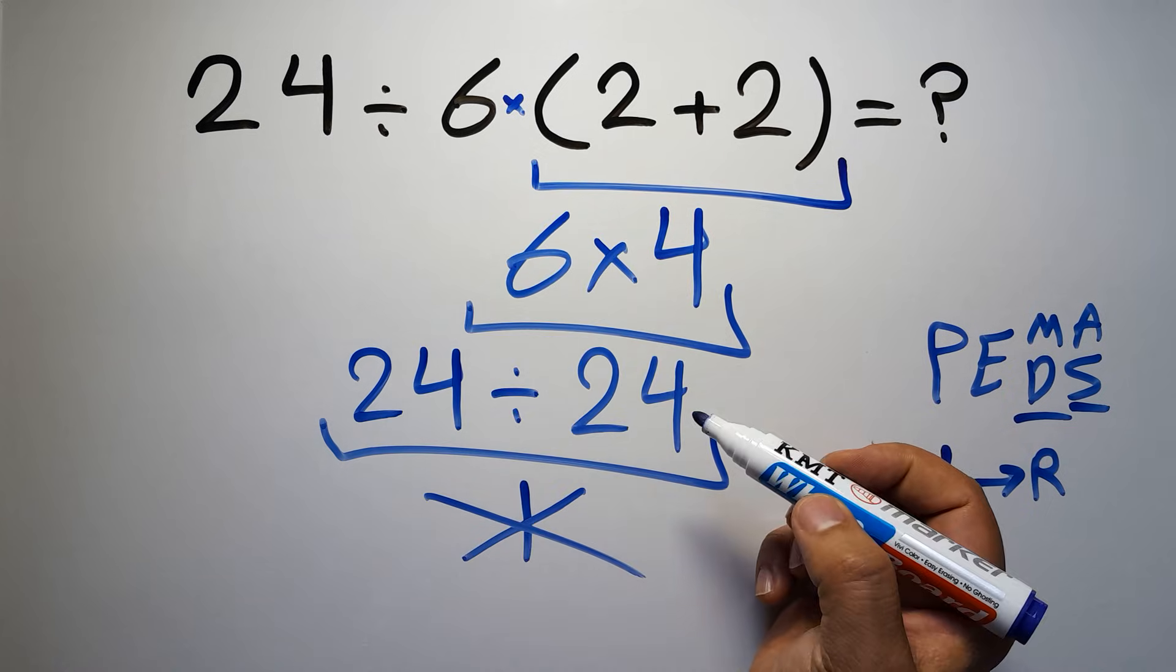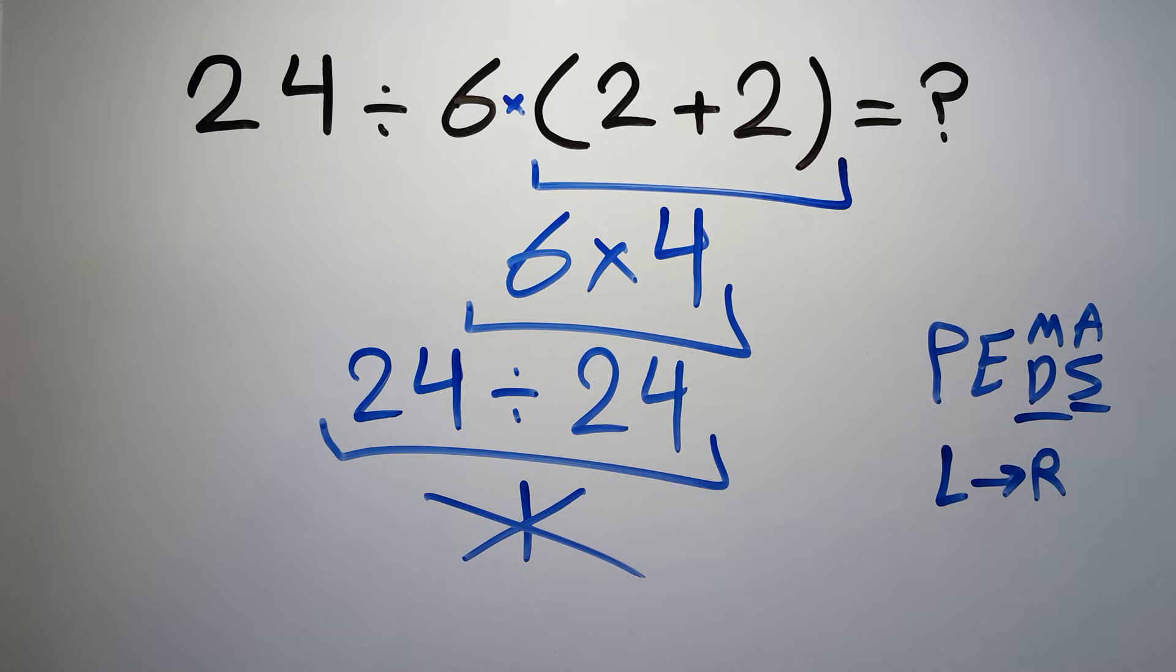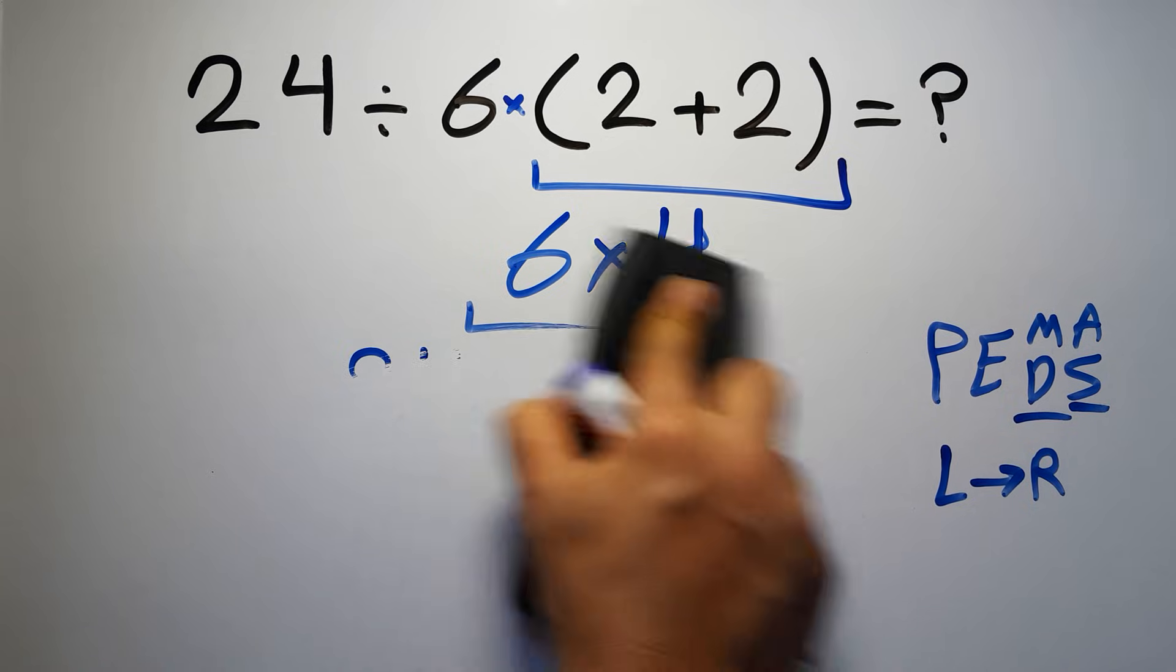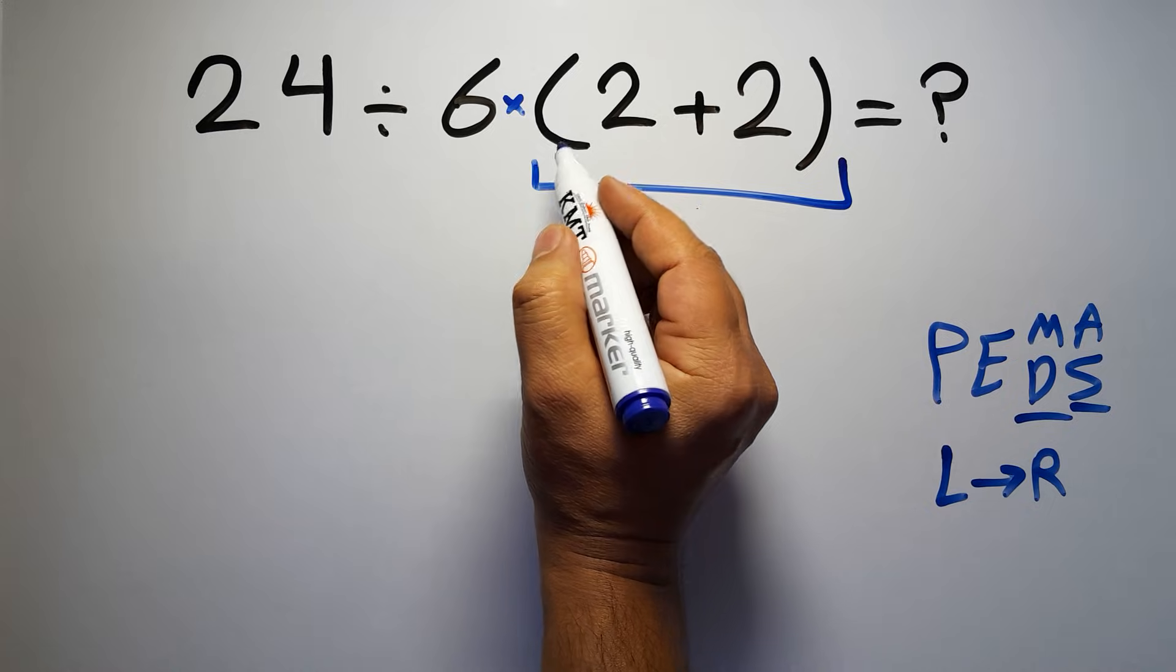If we do this multiplication before this division it is wrong. So first we have to do this parentheses.